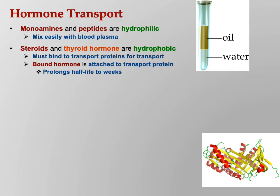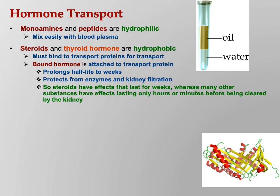The bound hormone attached to the transport protein prolongs the half-life to weeks. The monoamines and peptides, because they travel freely in the blood, are easily filtered out by the kidney and don't last long. But when you're bound to a big transport protein, the kidney doesn't filter out proteins — so hormones bound to transport proteins have much longer lasting effects. That's why steroids are powerful hormones: they stay active in the body for a long period of time, protected from enzymes and kidney filtration.